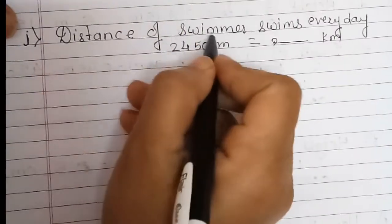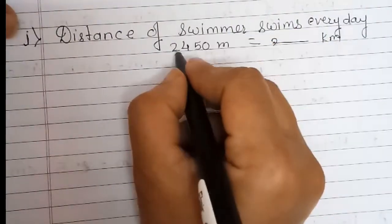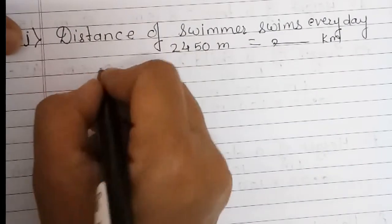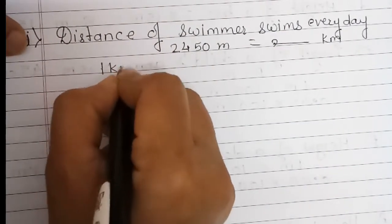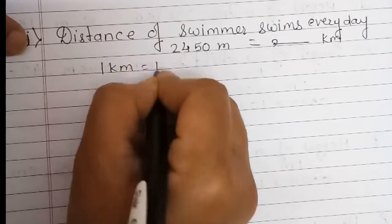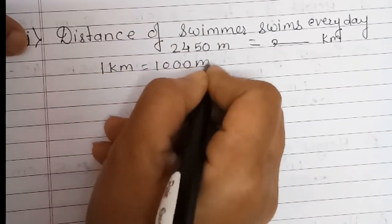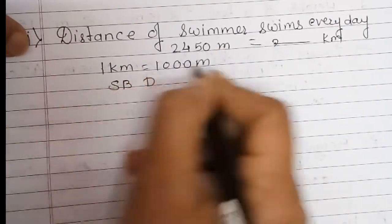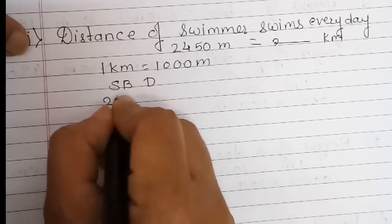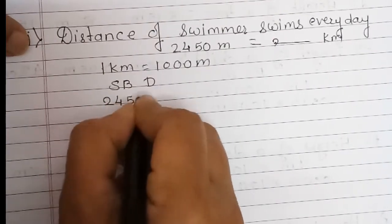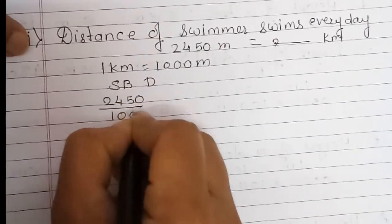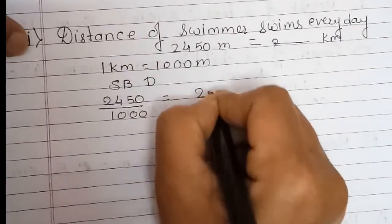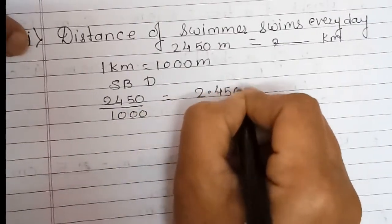A swimmer swims every day 2450 meters — you have to convert that into kilometers. As we know, 1 kilometer equals 1000 meters. Here we are going small to big, so we divide by 1000. So 2450 divided by 1000 gives 2.450 kilometers.